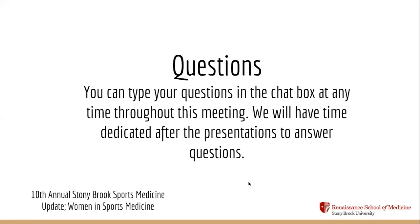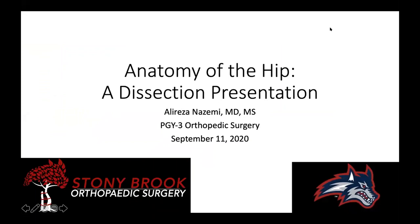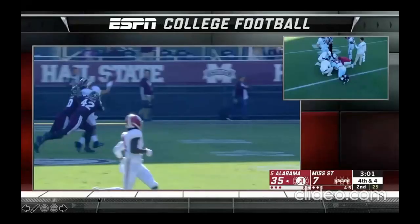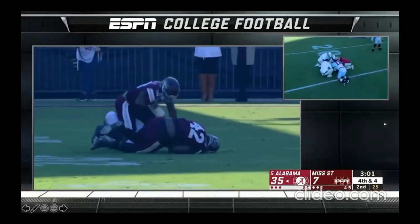Thank you, Dana. I'm Ali Reza Nizemi, a third-year orthopedic surgery resident at Stony Brook, and I'll be presenting the anatomy of the hip dissection presentation. Starting off with a video: this is Tua Tagovailoa, Alabama's quarterback in 2019. He suffered a posterior hip dislocation and a posterior wall of the acetabulum fracture. This is a very extreme injury in orthopedics, but it's important to understand the anatomy so that we can apply it in treating athletes.